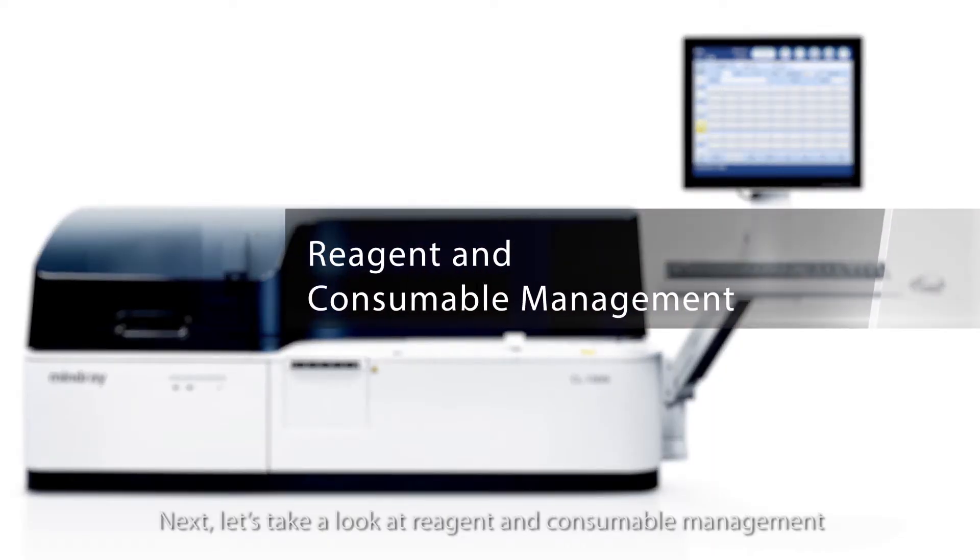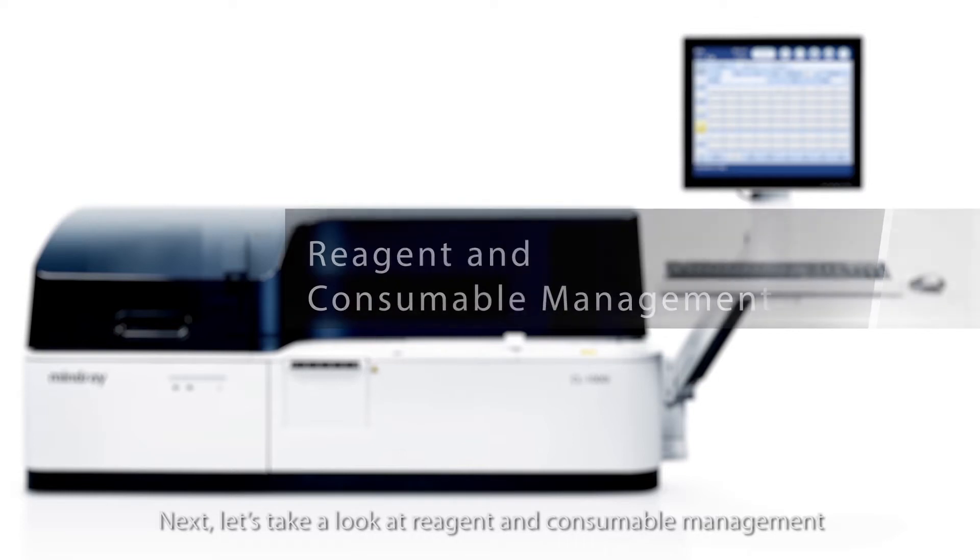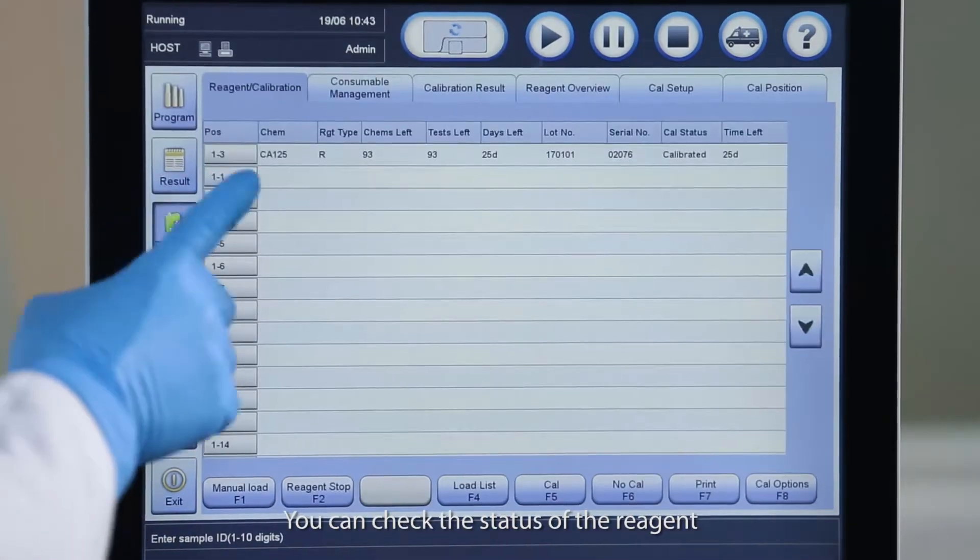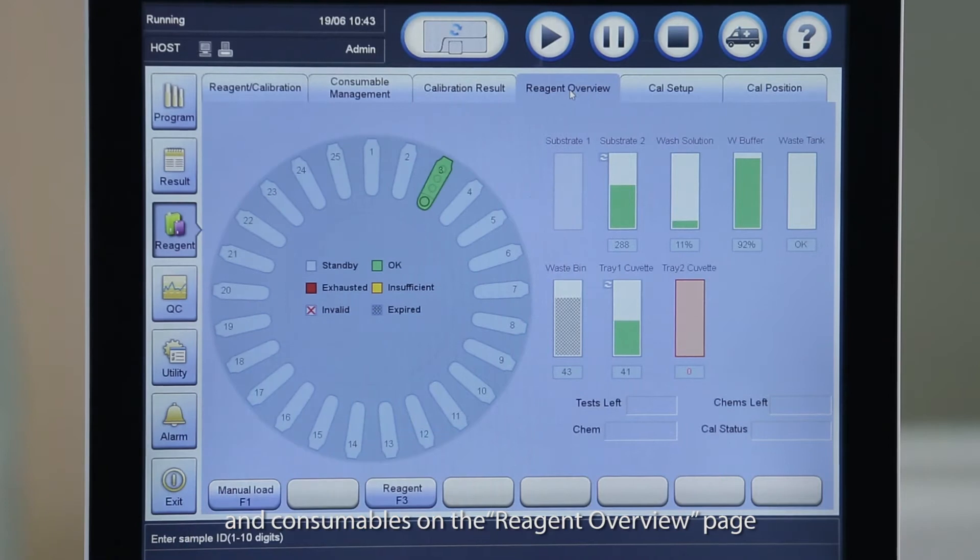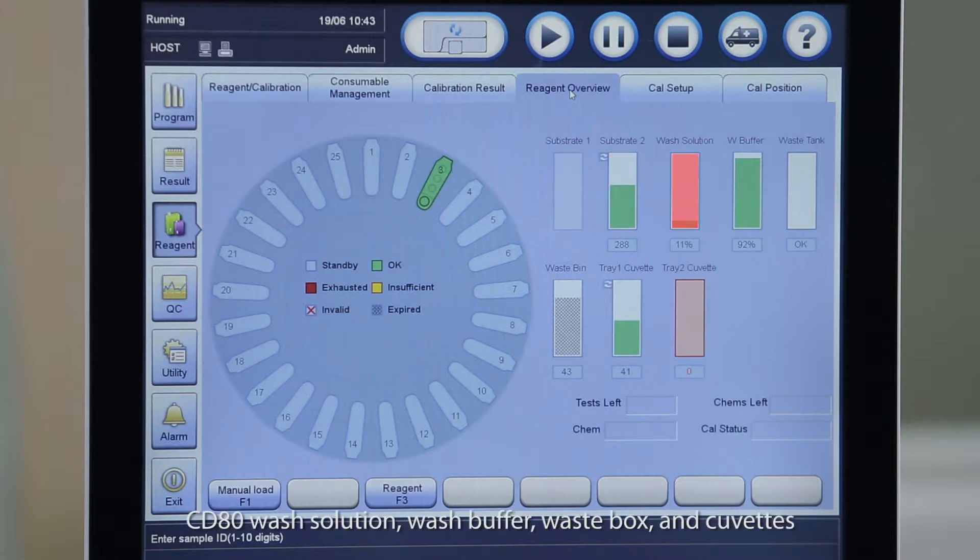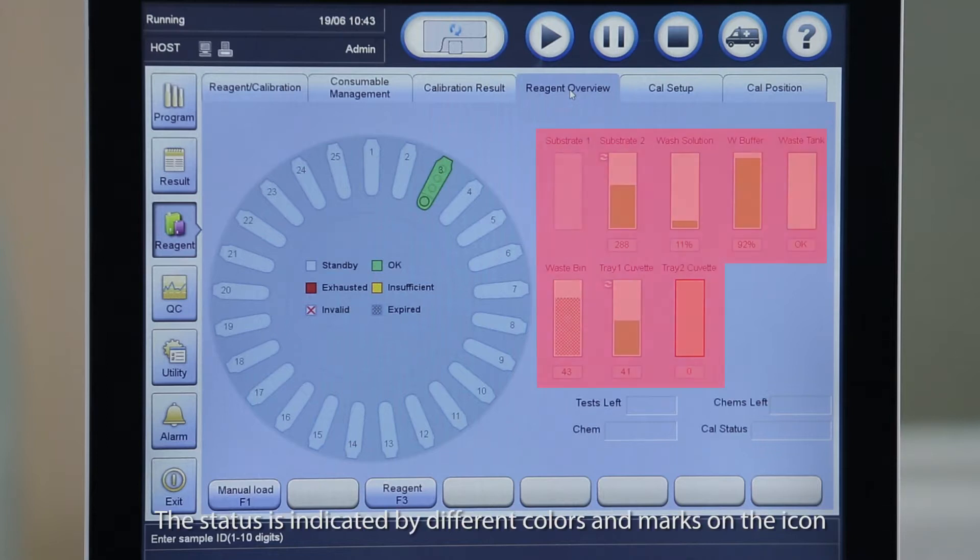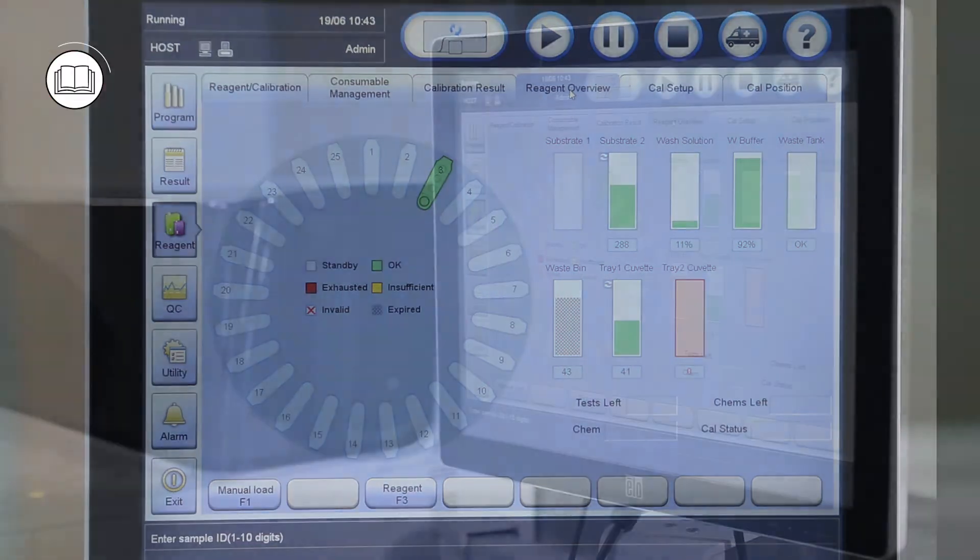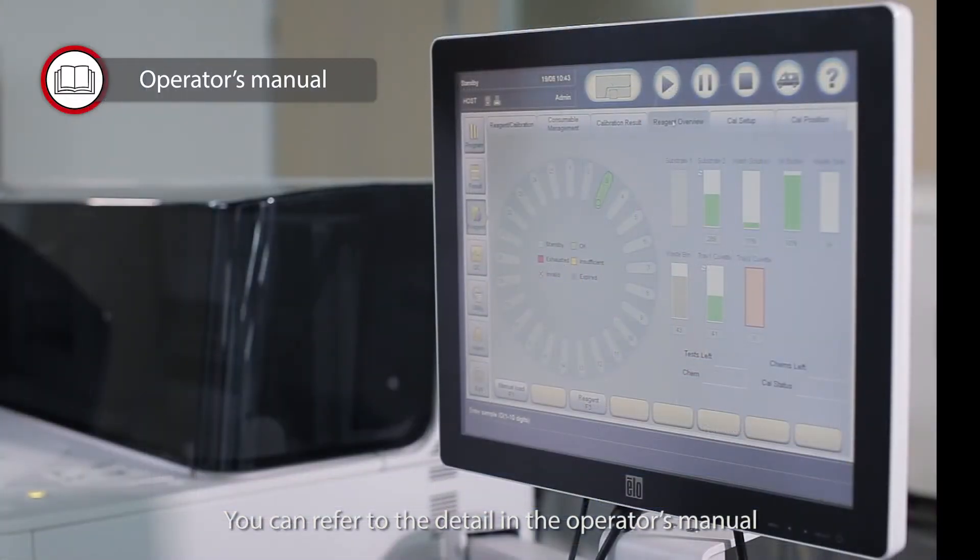Next, let's take a look at reagent and consumable management. You can check the status of the reagent and consumables on the reagent overview page. MindRay CL1000i and CL1200i use five kinds of consumables: substrate, CD80 wash solution, wash buffer, waste box and cuvettes. The status is indicated by different colors and marks on the icon. You can refer to the detail in the operator's manual.